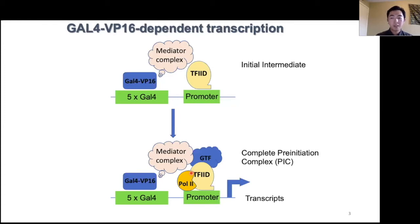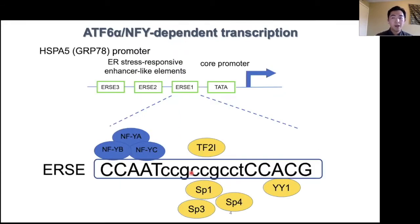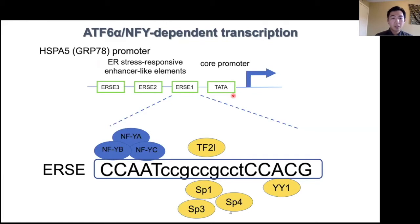In the next few slides, I'm going to introduce the authentic promoter model we're using to address this question and how we investigate this model in test tubes with biochemical approaches. The promoter we are using is the HSPA5 promoter, which is an ER stress responsive gene promoter. It contains three copies of ER stress responsive element sequences, ERSE. It is a great model to study transcription activation. The three copies of ERSEs are adjacent to the TATA box, the core promoter, and TSS, which makes it easier to develop biochemical approaches because we can work with shorter DNA fragments.